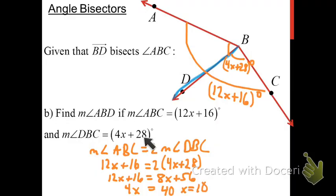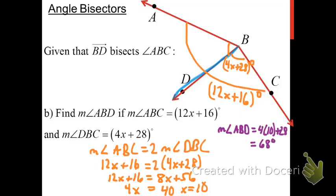Now that X equals 10, we substitute to find angle ABD, which equals angle DBC: 4 times 10 plus 28 equals 40 plus 28, or 68 degrees. We can verify: 12 times 10 plus 16 equals 136, and 136 is twice 68, so it checks out. You should now know how to use the angle addition postulate and angle bisectors to find missing angle measures. Thanks for your attention — see you next time.